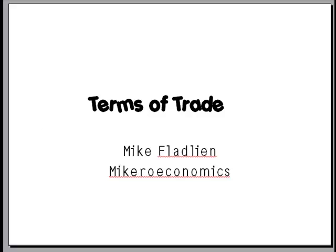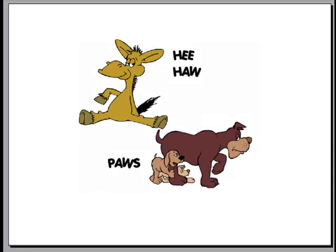Assume that there are only two countries in the world and there's only two things that they can produce: haws and paws.